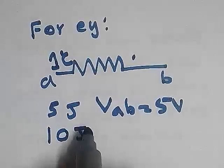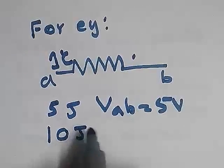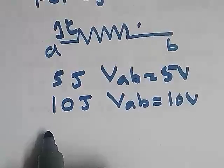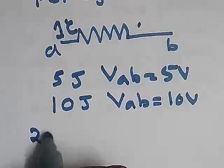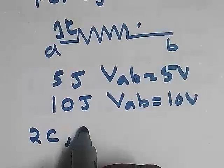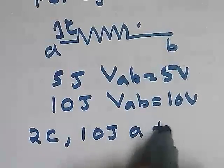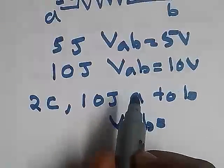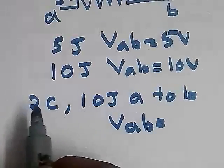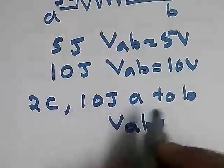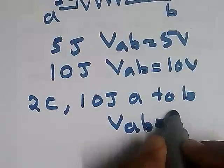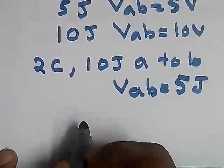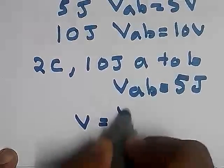If we apply 10 joules of energy to bring one coulomb of charge from A to B, then VAB equals 10 volts. Now suppose we move 2 coulombs of charge from A to B using 10 joules of energy. Then VAB is defined as the work done to bring one coulomb of charge from A to B, so VAB equals 5 volts — that is 10 joules divided by 2. So we can express voltage mathematically as V equal to W by Q.